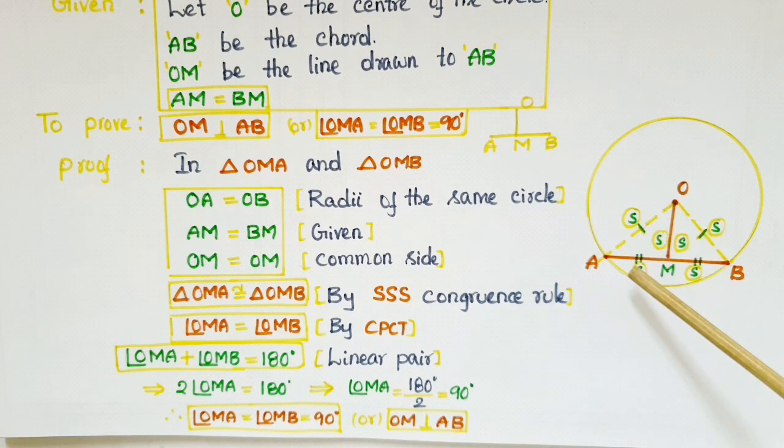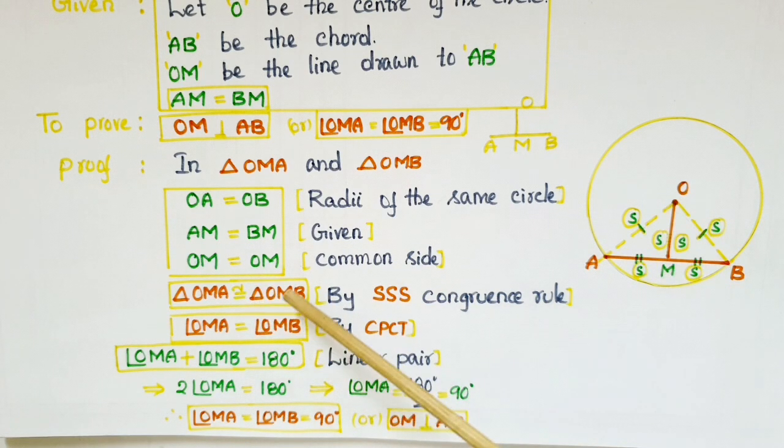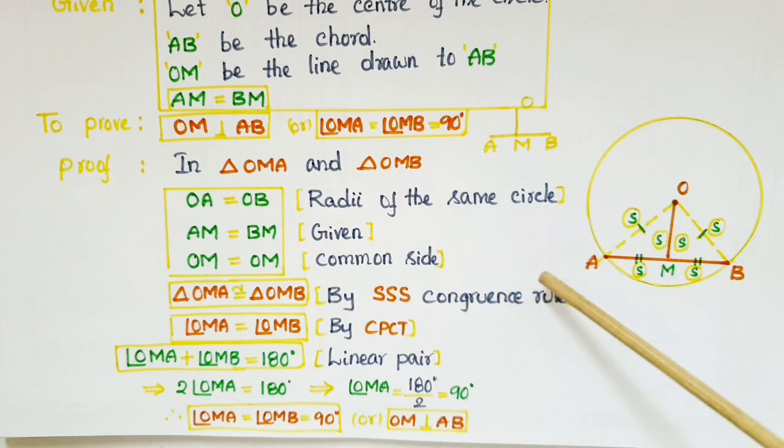By using SSS congruence rule, we can make these two triangles congruent. Triangle OMA is congruent to triangle OMB by SSS congruence rule.